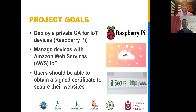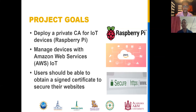Project Gold. With this project, we intended to deploy a Private Certificate Authority for Internet of Things devices. In this particular case, the Internet of Things device is a Raspberry Pi. We also set out to manage that device with Amazon Web Services for IoT, or AWS for short. The users should then be able to obtain a signed certificate from the Certificate Authority to secure their websites and applications.